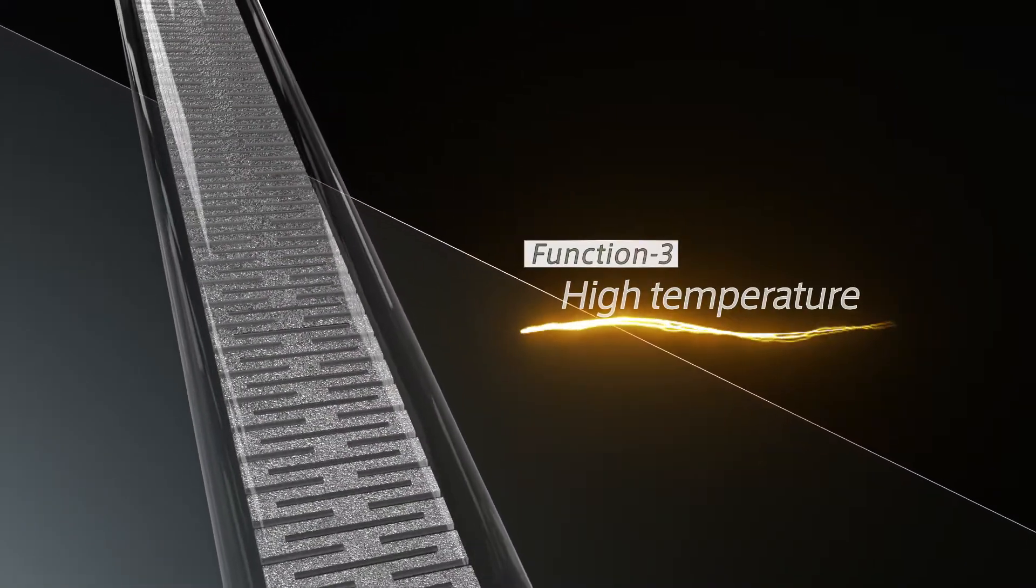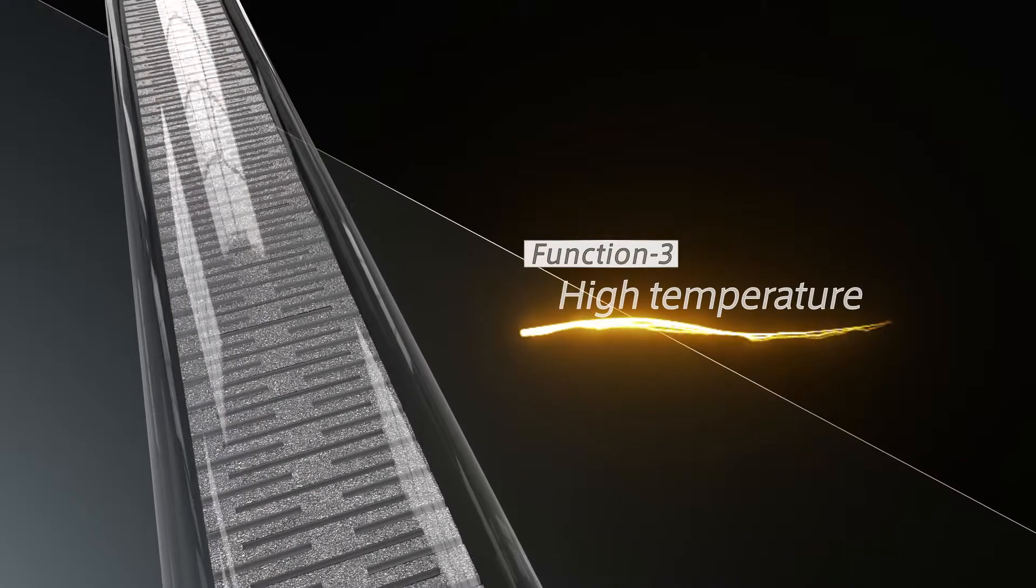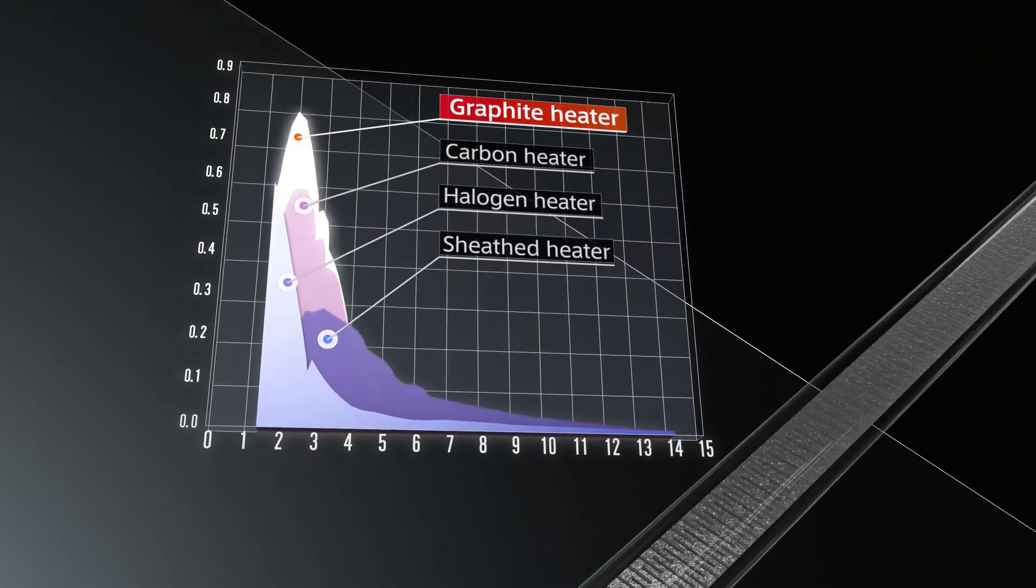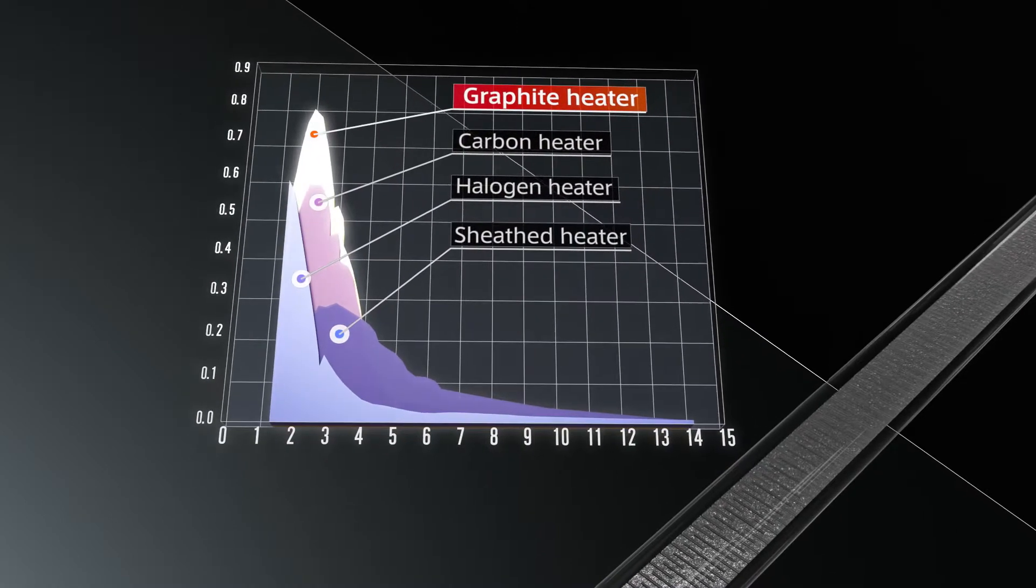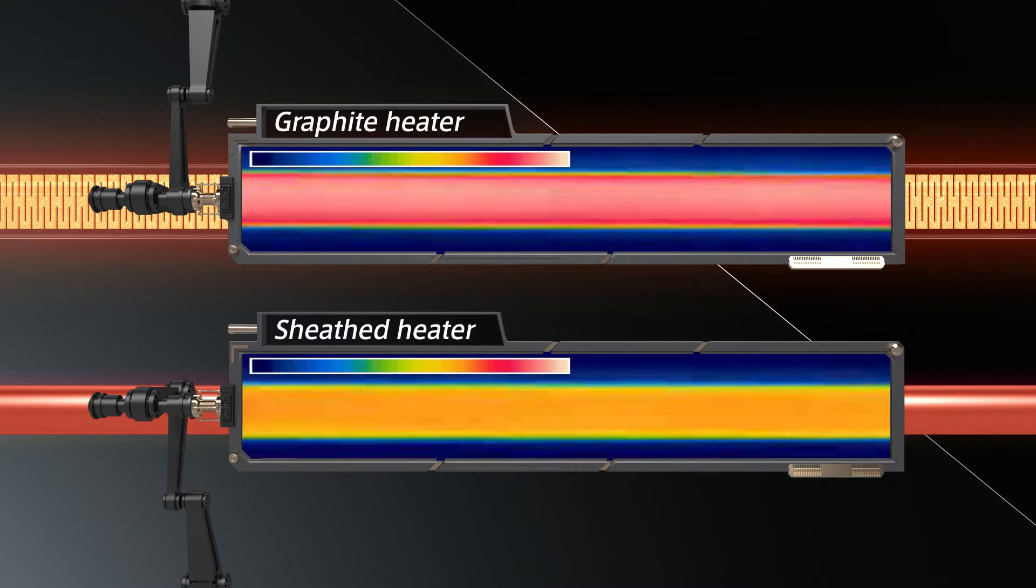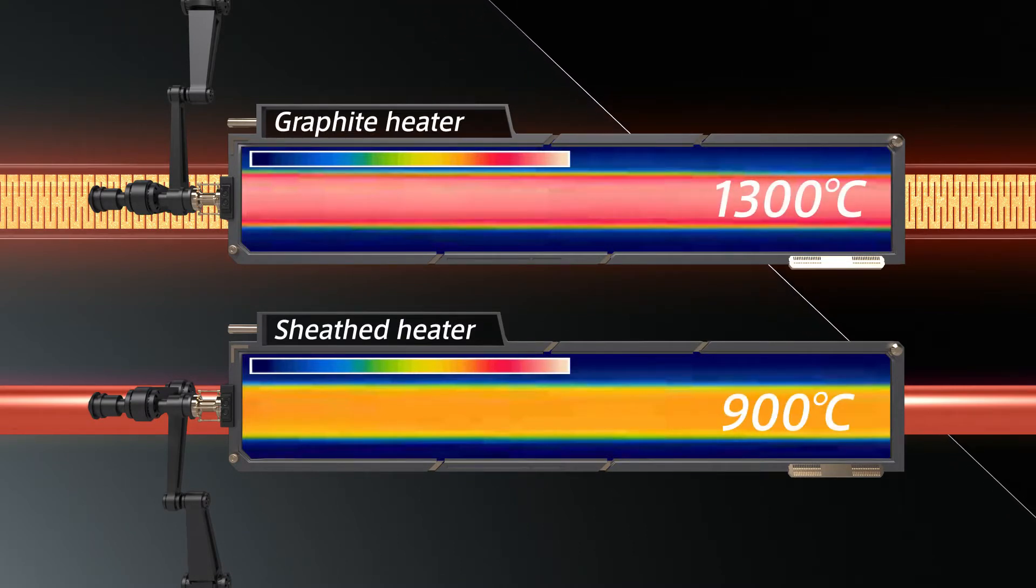Function 3: High temperature. Graphite radiates at an extremely high intensity, achieving temperatures of up to 1,300 degrees Celsius, higher than a sheathed heater.